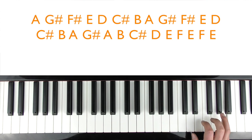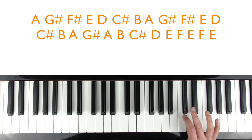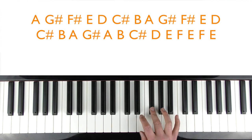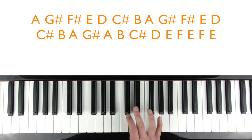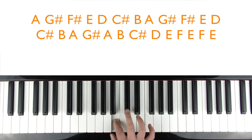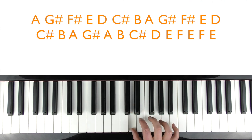So we've got A, G-sharp, F-sharp, E, D, C-sharp, B, A. And then you're going to cross over to G-sharp. Back up to A, B, C-sharp, D, E, A, F, E, F, E. So if you copy the fingers that I'm using, I'll do it again.